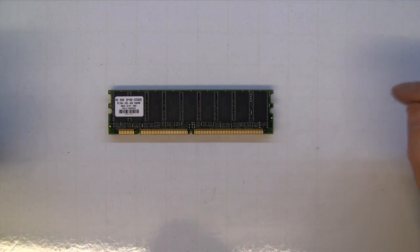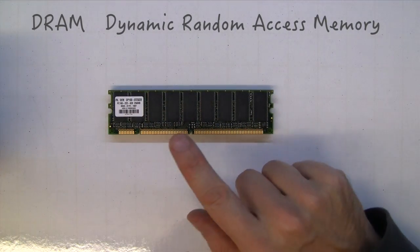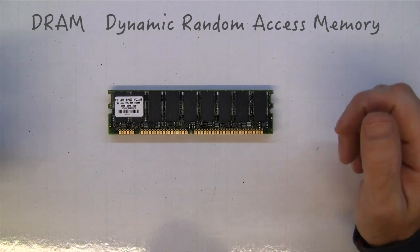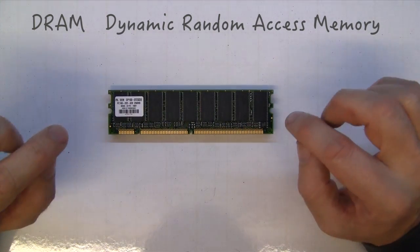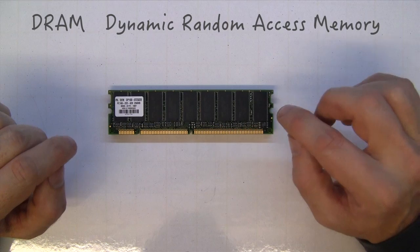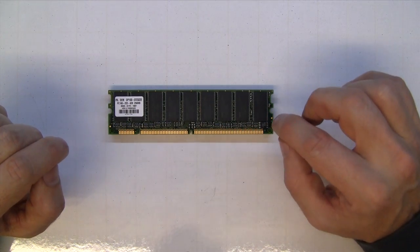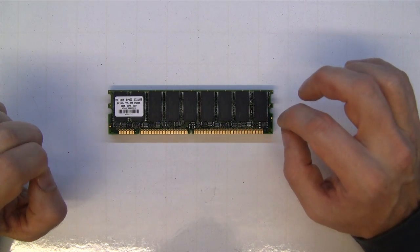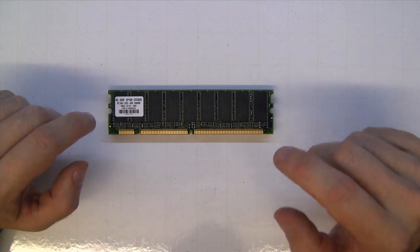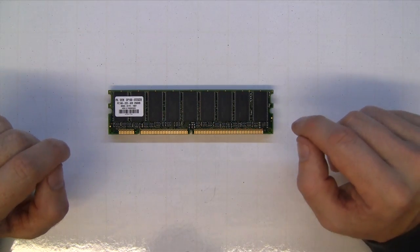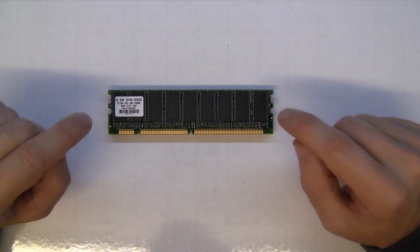Another use for capacitors is memory. This is dynamic random access memory or DRAM. You'll find these in your computer. Every single chip has millions of tiny capacitors on there, and each capacitor has a transistor that reads whether it's charged or discharged. That represents the zero or the one for your computer.